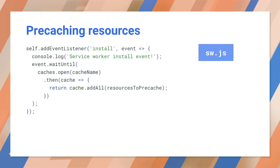Now we can load the files into the cache. The service worker will receive an install event during registration — this is our cue to put the files into the cache. We'll add a listener for it. Notice the self keyword: in a worker, self is the worker; everywhere else, self is the window — in other words, self is the current global object. If you're not sure what the fat arrow (=>) means, it's another way to define a function, introduced in ES2015. You can also write it as an anonymous function with a single event parameter.